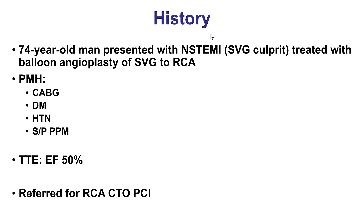The patient was an elderly gentleman who presented with non-ST elevation myocardial infarction due to a severe lesion in a saphenous vein graft to the right coronary artery. The vein graft was treated with balloon angioplasty only, without stent placement, and the patient was referred for recanalizing the native right coronary artery CTO. The rationale is that the patency of saphenous vein grafts that start failing, especially causing myocardial infarction, is low, and recanalizing the native vessel can provide superior short- and long-term patency.